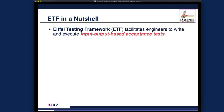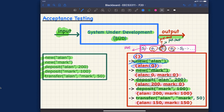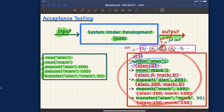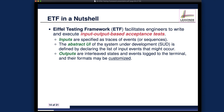We already talked about how the input and output look like for an acceptance test previously. Inputs are simply a sequential trace of events — this is one input example for an acceptance test. The output will simply be an interleaving of events and states. The abstract UI is simply the list of input events that might occur, abstracting the user interactions.